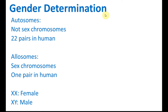Today we're covering gender or sex determinations. There are two types of chromosomes. The first is called autosomes — these are the chromosomes that are not sex chromosomes, and in human bodies we have 22 pairs of autosomes. The second type is the allosomes, which are the sex chromosomes. We have one pair in humans: XX is female and XY is male.